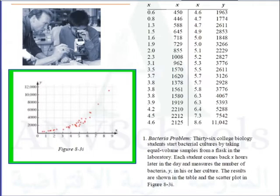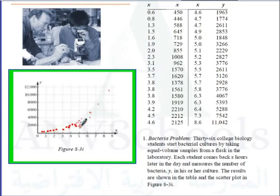Let's do some real problems now. Problem number 1 is the bacterial problem. 36 college biology students start bacterial cultures by taking equal volume samples from a flask in the laboratory. Each student comes back 8 hours later and measures the number of bacteria y in his or her culture. The results are shown in the table and scatter plot in Figure 8-3i.